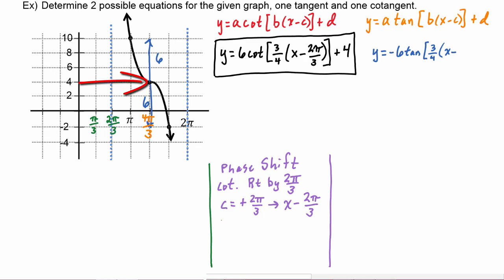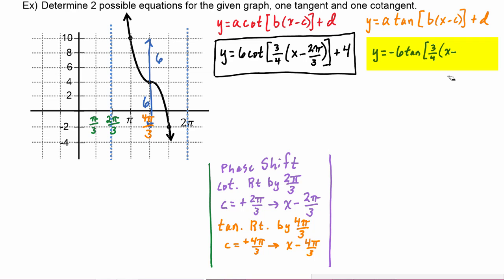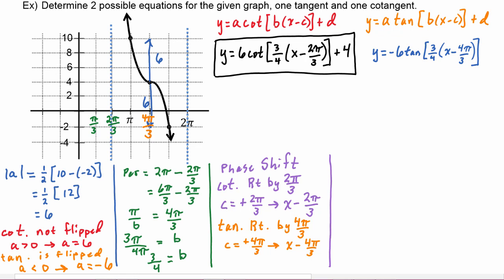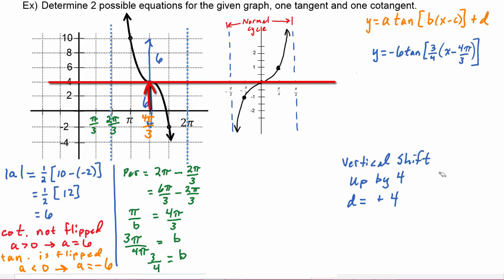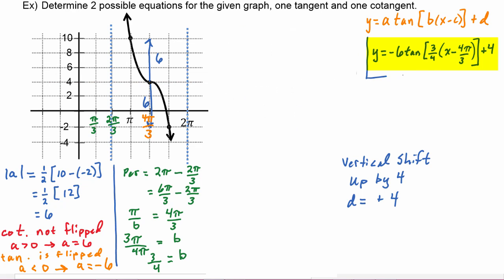For the tangent, the phase shift is to the right by 4pi over 3, meaning c is positive 4pi over 3, so we write x minus 4pi over 3 in the equation. For the vertical shift, the middle point should be on the x-axis of unaltered tangent, but it has moved up by four, so the vertical shift is the same and we put plus four. Here is our complete function equation if it were a tangent.